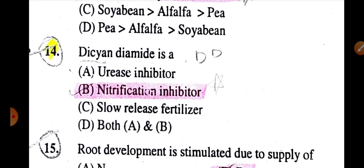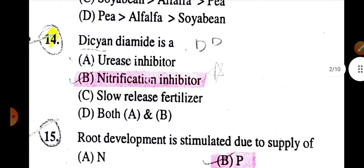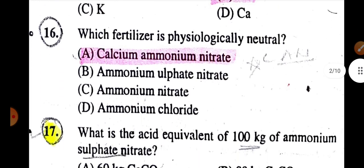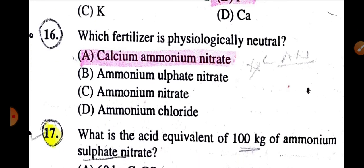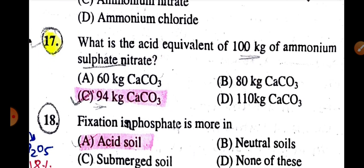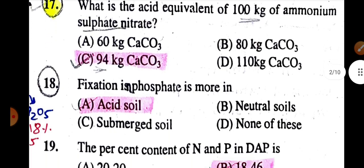Dicyan-diamide is a nitrification inhibitor. Root development is stimulated due to supply of phosphorus. Which fertilizer is physiologically neutral is calcium ammonium nitrate. What is the acid equivalent of 100 kg of ammonium sulfate is 94 kg CaCO3.